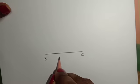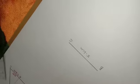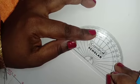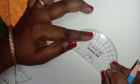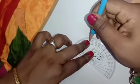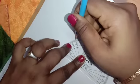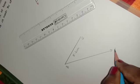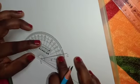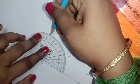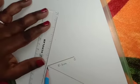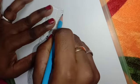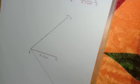Name it BC, 5.6 centimeter. At B, 60 degree. Sorry, 40 degree. Acute angle. One ray. Now,